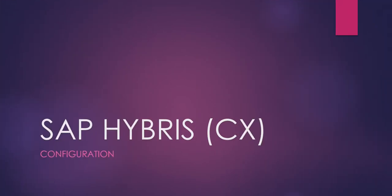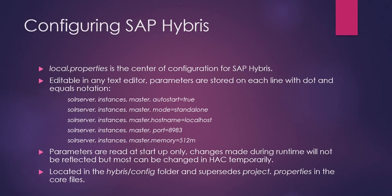The last element to discuss is how to configure SAP Hybris. This is done through the file local.properties, which is the center of configuration for SAP Hybris. It is editable in any text editor and parameters are stored on each line with dot and equals notation. Parameters are read at startup only — changes made during runtime will not be reflected, but can be changed temporarily in HAC (Hybris Administration Console). The file is located in the hybris/config folder and supersedes project.properties in the core files. local.properties is instrumental in configuring SAP Hybris.